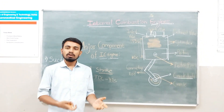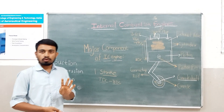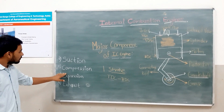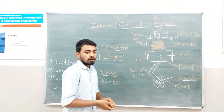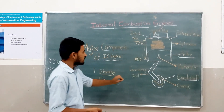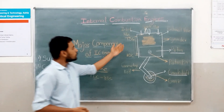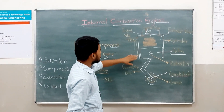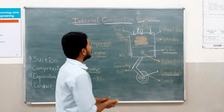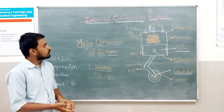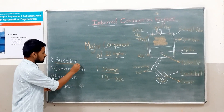Now let us understand the working of a four-stroke internal combustion engine. The four stroke operations are suction, compression, expansion, and exhaust. During the first stroke, the piston moves from TDC to BDC and the inlet valve is open, which allows the mixture of air and fuel to enter the combustion chamber. This process is known as suction.